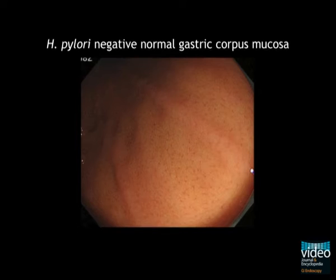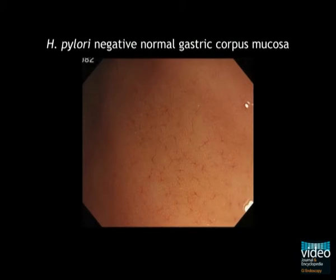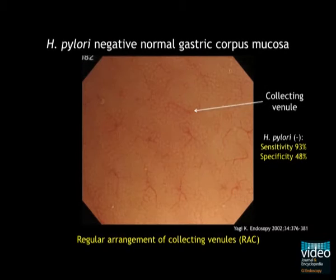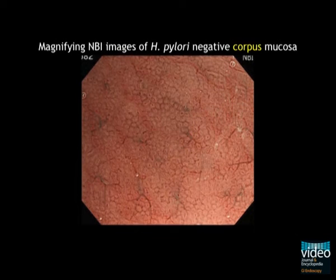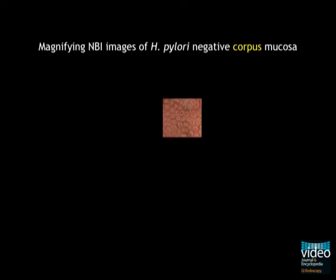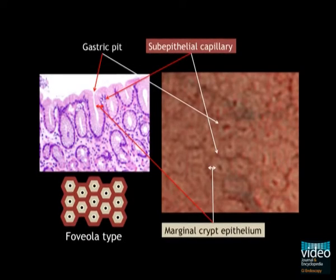Moreover, when magnifying observation is used, regularly arranged spider-like collecting venules can be observed. This finding is seen in more than 90% of H. pylori-negative patients. In the magnifying NBI image of the corpus mucosa, the round gastric pits can be seen and the light brownish epithelium are surrounded with a network of dark brownish capillaries.